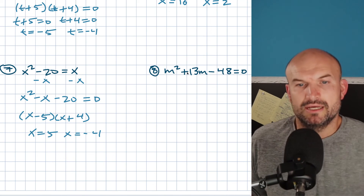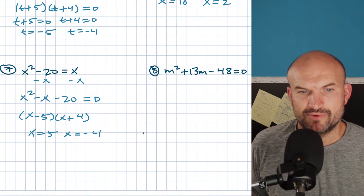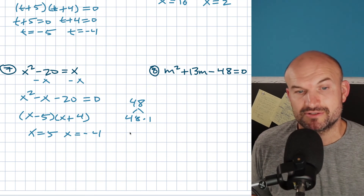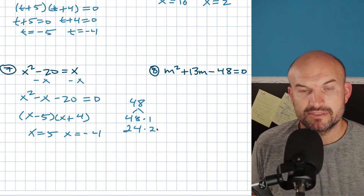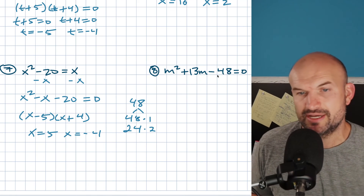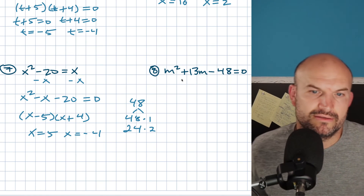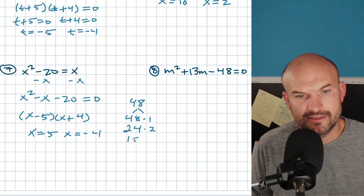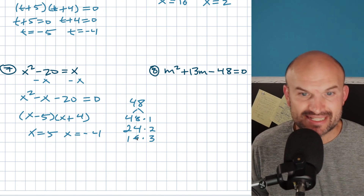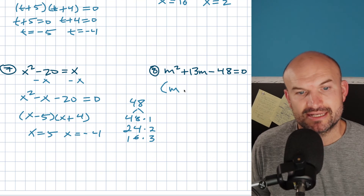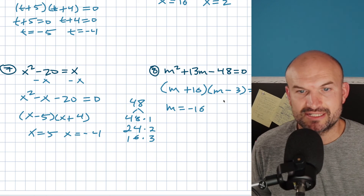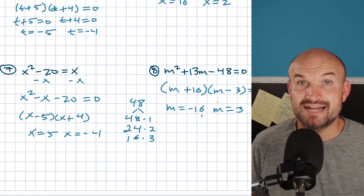The last one has negative 48 and 13. Since the last term is negative, I'm looking for the difference of my factors. Let's write out the factors of 48: 48 and 1, 24 and 2, 16 and 3 — and 16 and 3 have a difference of 13. It has to be a positive difference, so 16 is positive and 3 is negative. So I can rewrite this as (m plus 16)(m minus 3) equals zero. Therefore m equals negative 16 and m equals positive 3.